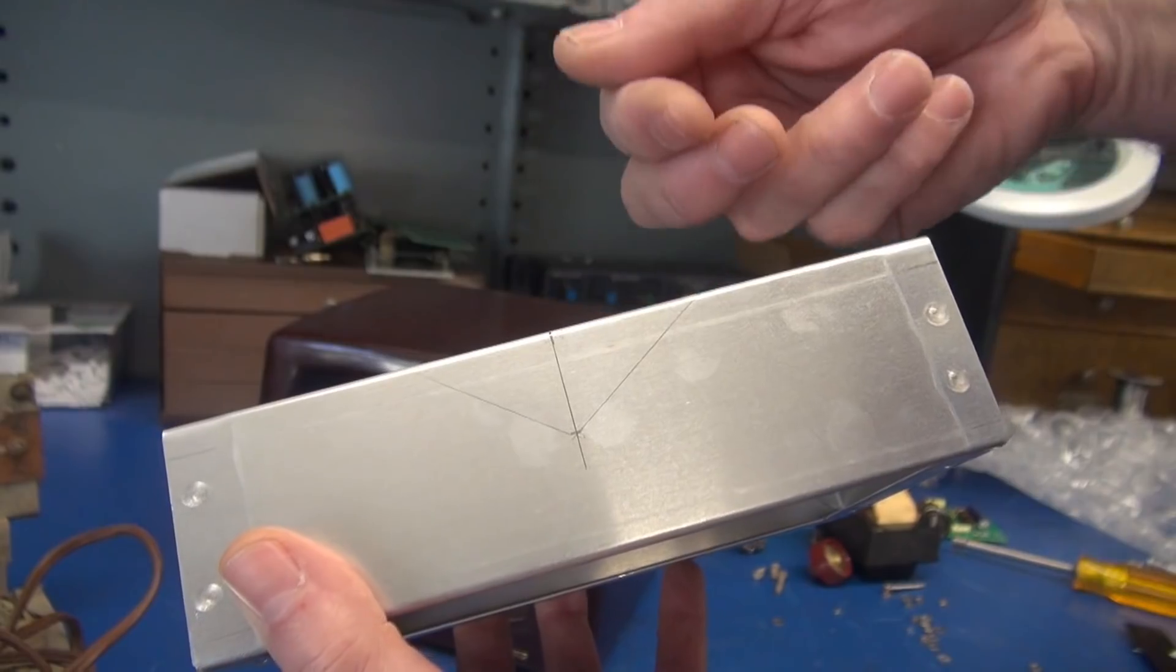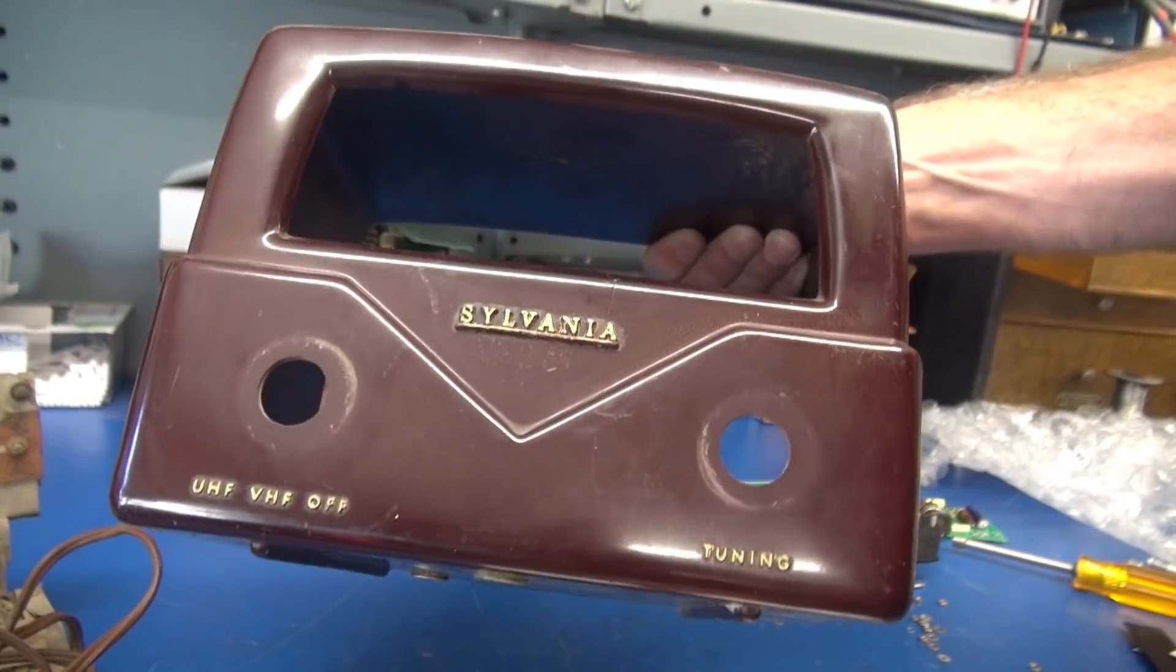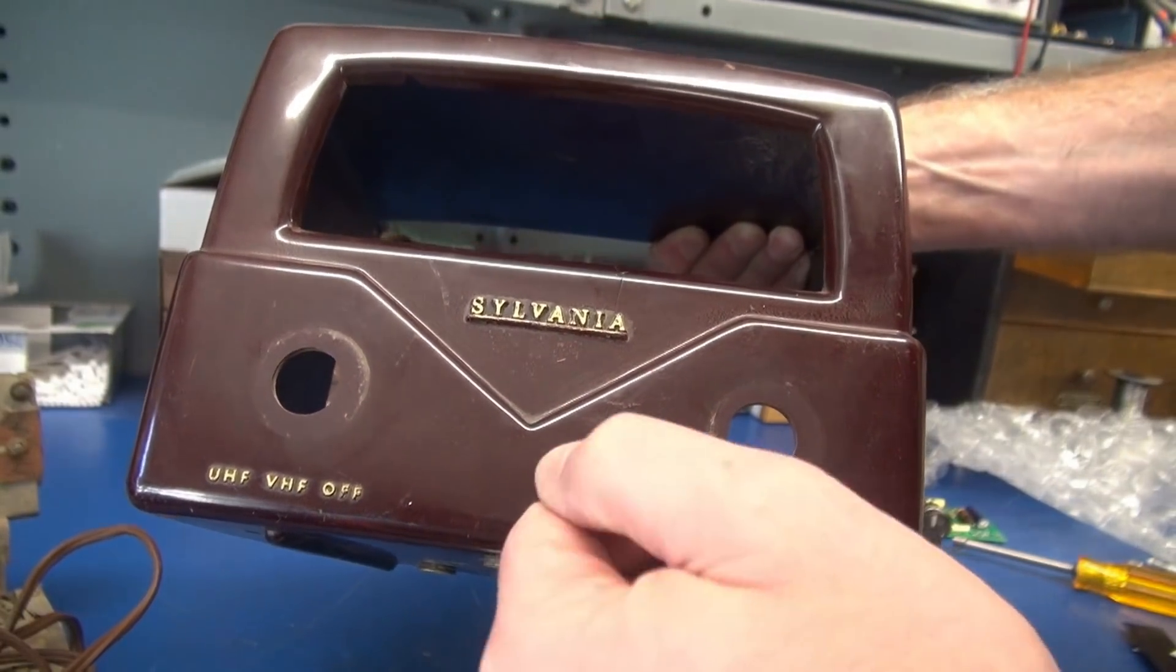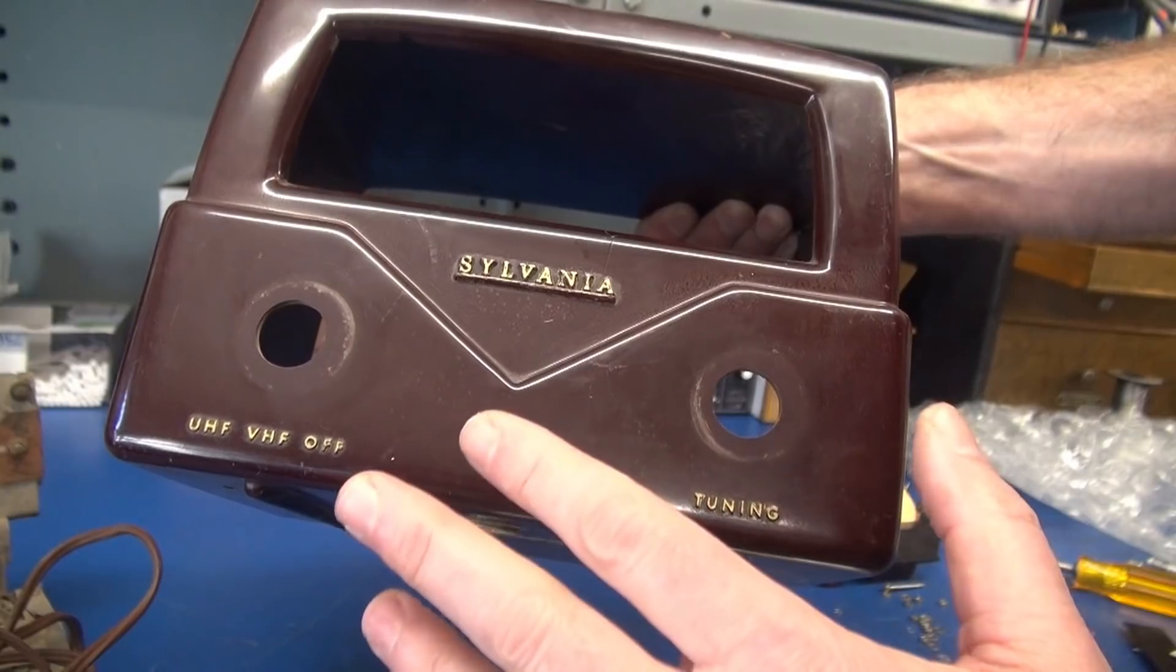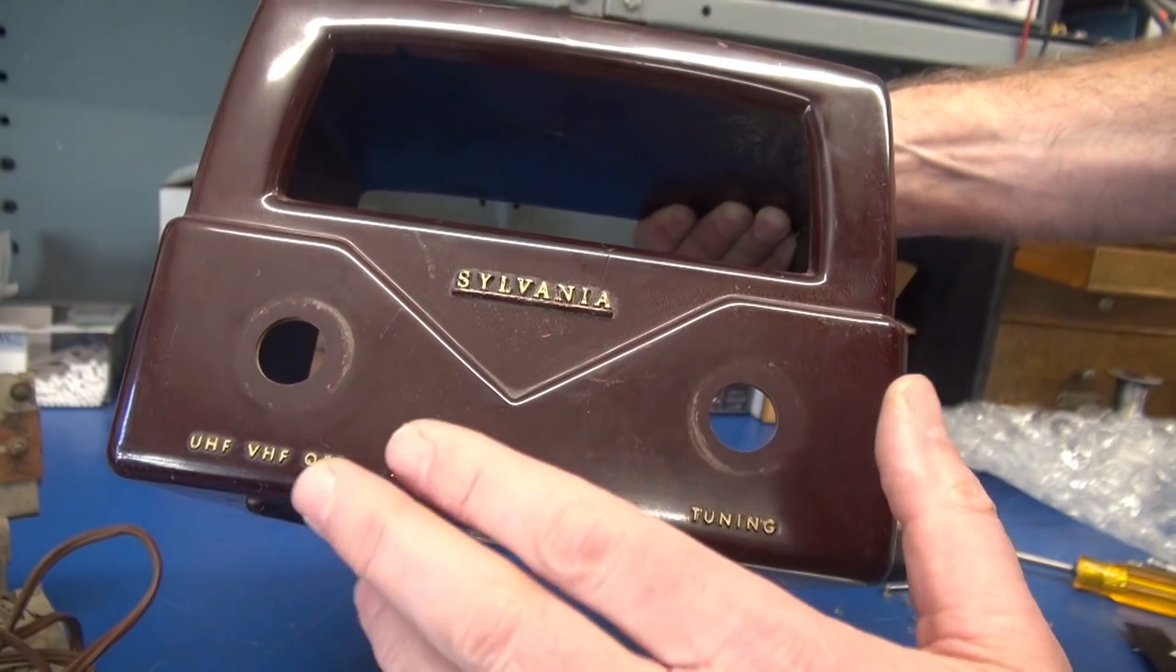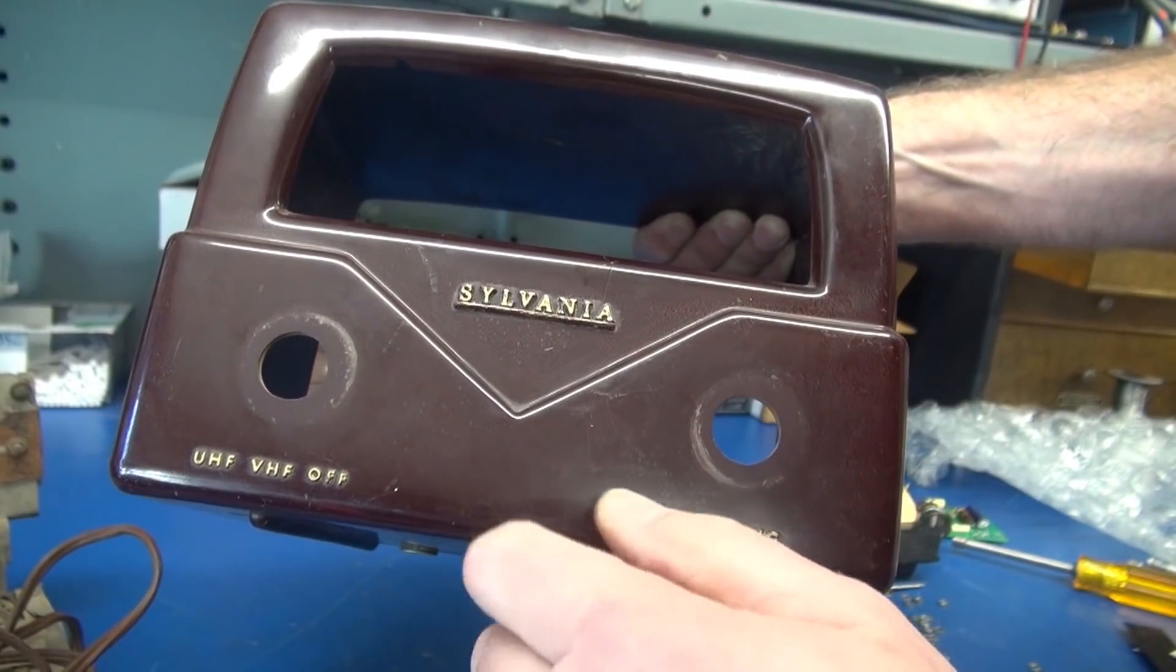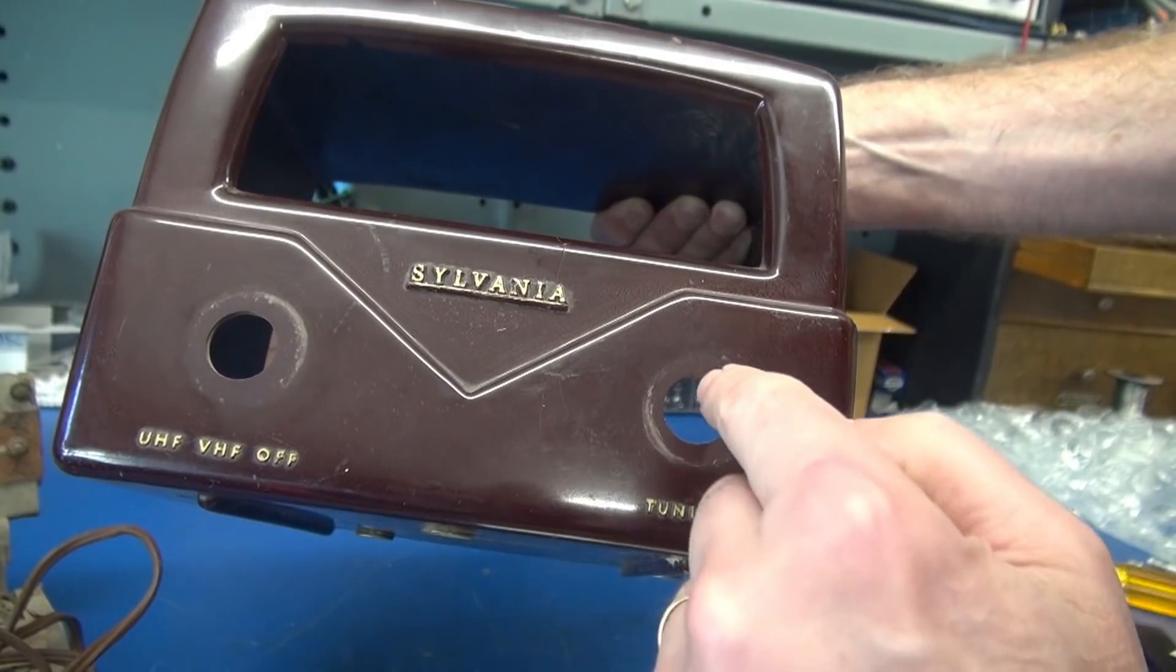Here is where the V cutout is so that the chassis will seat into the cabinet properly. On the front of this cabinet we need to drill a hole right here for the input jack, but I'm not going to drill that until the chassis is ready so that when we pilot through the cabinet it's going to line up perfectly on the chassis.